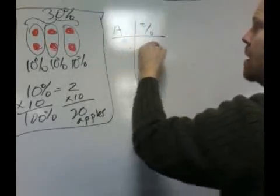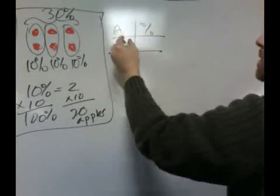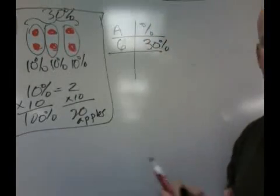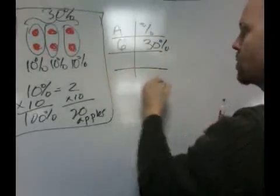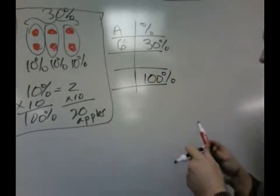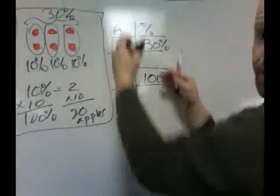but we've got six apples, and that equals 30%, and then we're trying to figure out how many apples are in 100%. A lot of different ways to figure this out.